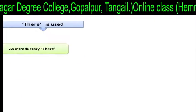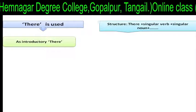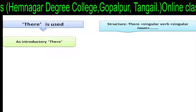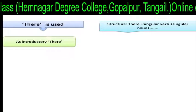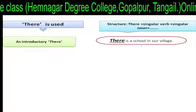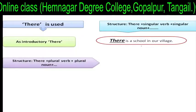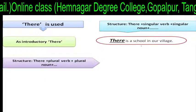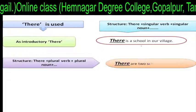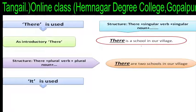There is used as introductory 'there.' Structure one: 'There' plus singular verb plus singular noun plus extension. For example: 'There is a school in a village.' Structure two: 'There' plus plural verb plus plural noun. For example: 'There are two schools in our village.'